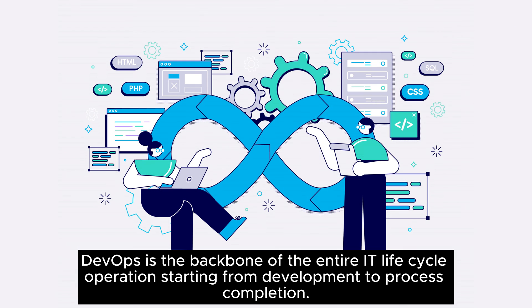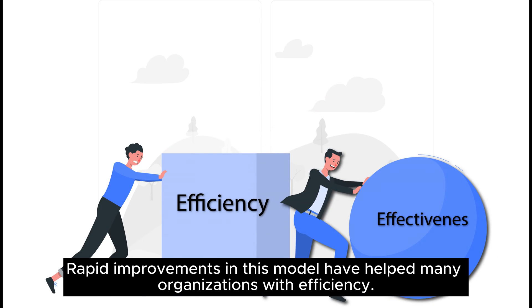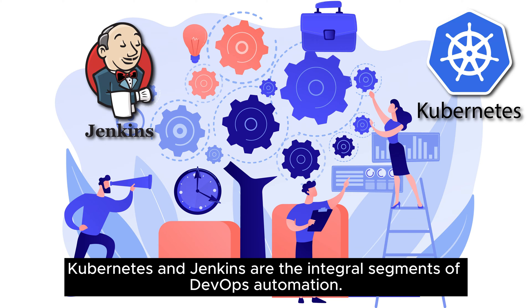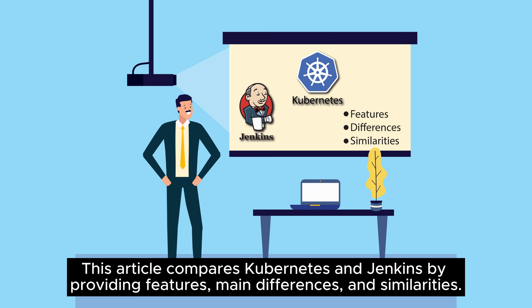DevOps is the backbone of the entire IT lifecycle operation, starting from development to process completion. Rapid improvements in this model have helped many organizations with efficiency. Kubernetes and Jenkins are the integral segments of DevOps automation. This video compares Kubernetes and Jenkins by providing features, main differences, and similarities.